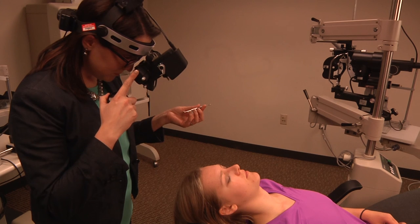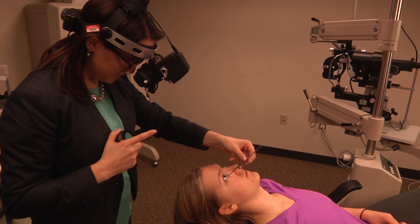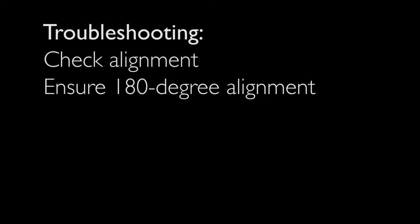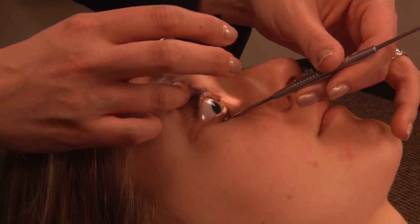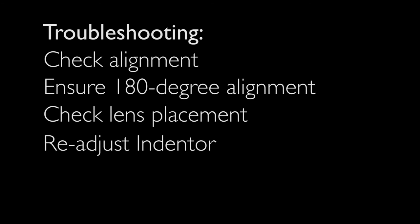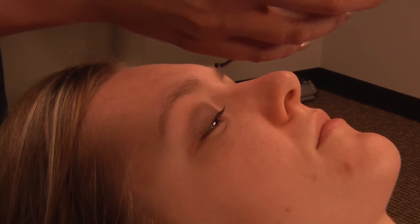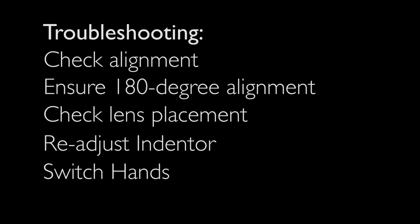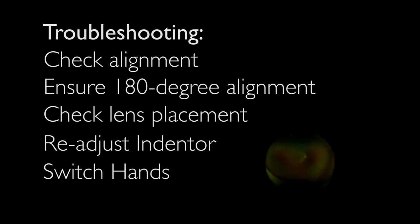For troubleshooting: if you have clear retina in view but no indentation, check alignment — it is common when first learning for the hand to fall sideways, moving the indenter off axis. Ensure you are truly 180 degrees from the view. If the view is blurred, check condensing lens placement and pull back more with the lens. If the indenter is in the way, readjust or switch hands. If you see the indenter off to the side of the view, move the indenter slightly away from the area you want to see — this moves the view to the center of the condensing lens. This seems counterintuitive, but recall that images in the lens are reversed and inverted compared to true anatomy.